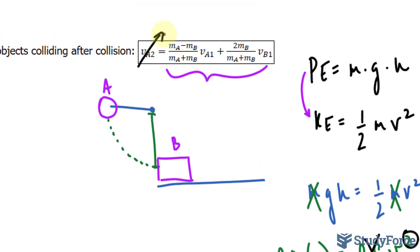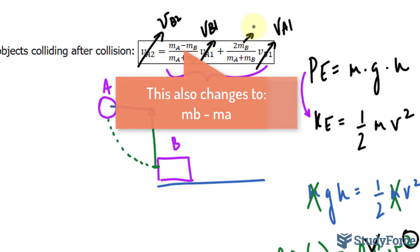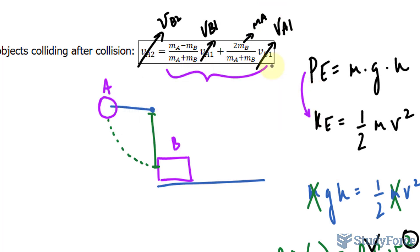So if you want this to be VB2, or the speed of block B after the collision, you change this to VB1, change that to VA1, and this MB becomes MA. So I'm just telling you this in case you're given one of these formulas and you're expected to know how to use both.